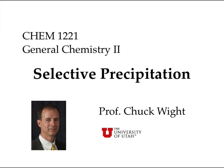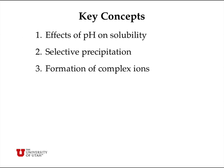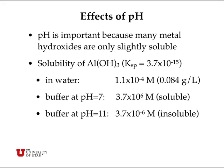Welcome back to General Chemistry 2. My name is Chuck White, and today's lesson is on selective precipitation of ionic solids. We're going to talk about the effect of pH on the solubility of metal hydroxides, selective precipitation where we add soluble salts which recombine to precipitate into insoluble salts, and the formation of complex ions as a general strategy for increasing the solubility of otherwise insoluble compounds.